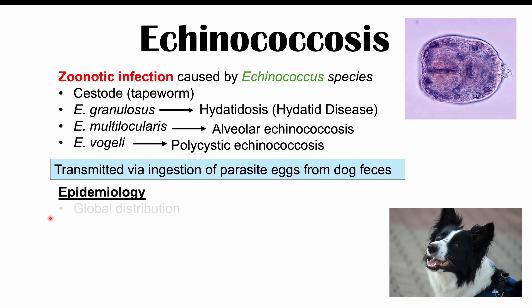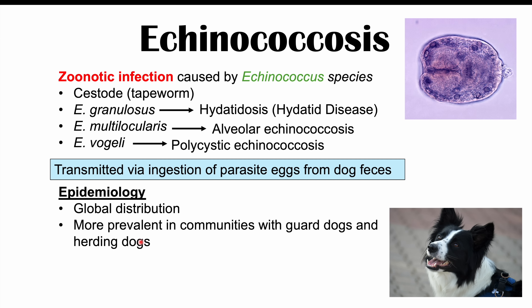Echinococcus granulosus infections generally occur globally, although they're less common in North America and Western Europe and more common in other parts of the world. They're more prevalent in communities with guard dogs and herding dogs — any places where there may be rural communities with dogs that herd other animals, where those dogs are living outside.